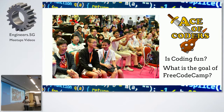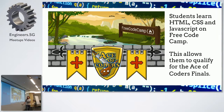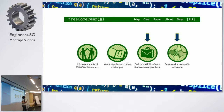The next question is: what is the goal of Free Code Camp? Before I answer that, I have to explain what Free Code Camp is. Free Code Camp is where students can learn HTML, CSS, and eventually JavaScript. This allows them to qualify for the Ace of Coders final. Free Code Camp is actually a great website which I have done — it teaches you how to code pretty easily, step by step, and you get to do it by making an app.